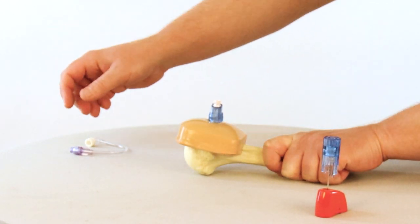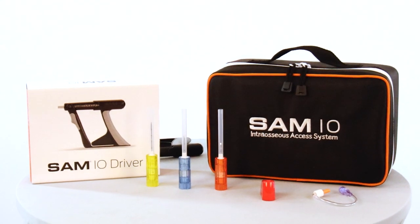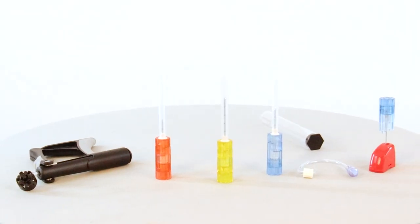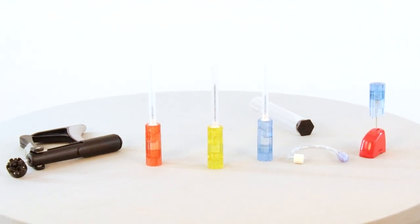Needle sets are available in three sizes and color-coded for easy identification. Each needle set comes with a needle, extension set, and convenient needle vise sharps containment device.